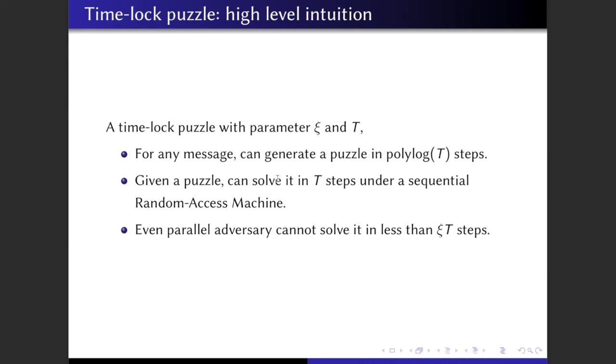A time-lock puzzle needs to satisfy three properties. First of all, solving the puzzle will always return the correct solution. Secondly, it should be efficient, meaning that generating the puzzle will take polylog time regarding t, the time parameter, and solving the puzzle will take at most t steps. Notice that both of these time complexities should happen on a sequential random access machine, so without needing parallel computing, they should still be able to achieve this time complexity.